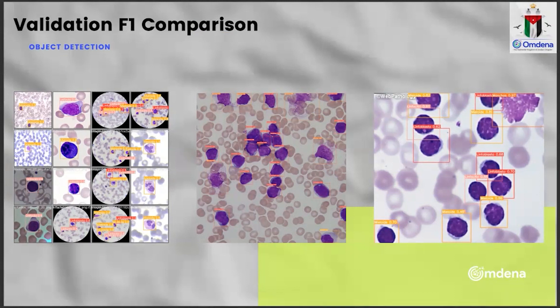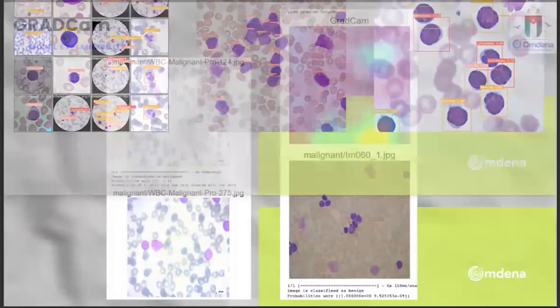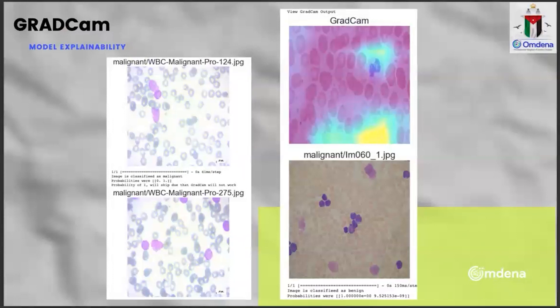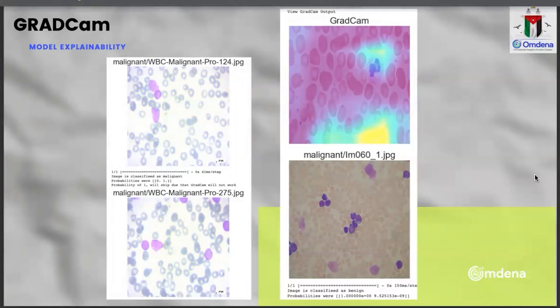The model classifies correctly the lymphoblasts and other types of white blood cells such as lymphocytes and granulocytes. For the explainability of our models, we used Grad-CAM, which shows how the models were learning and what the models were concentrated on. In the Grad-CAM image, the model is seen focusing on the white blood cells to understand whether the picture is malignant or not.